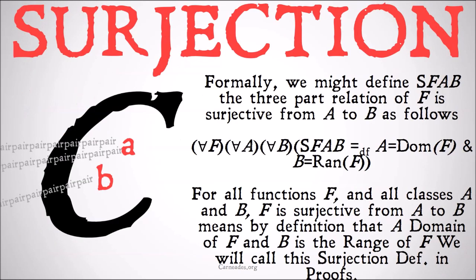Formally, we might define the tripartite relation SFAB — F is surjective from A to B — as follows: for all functions F and all classes A and B, F is surjective from A to B means by definition that A is the domain of F and B is the range of F. We'll call this the surjection definition in proofs.